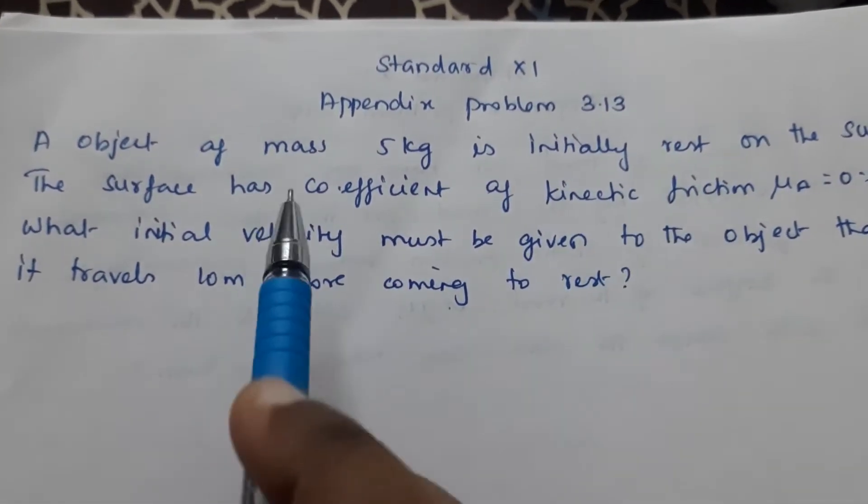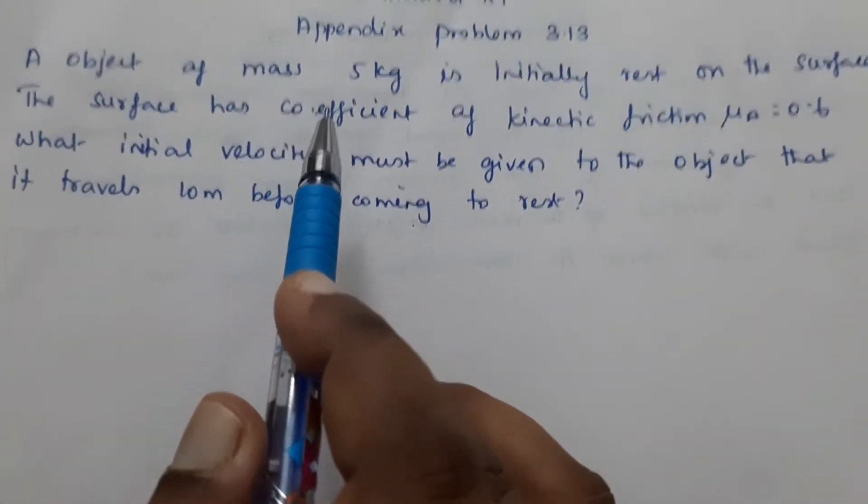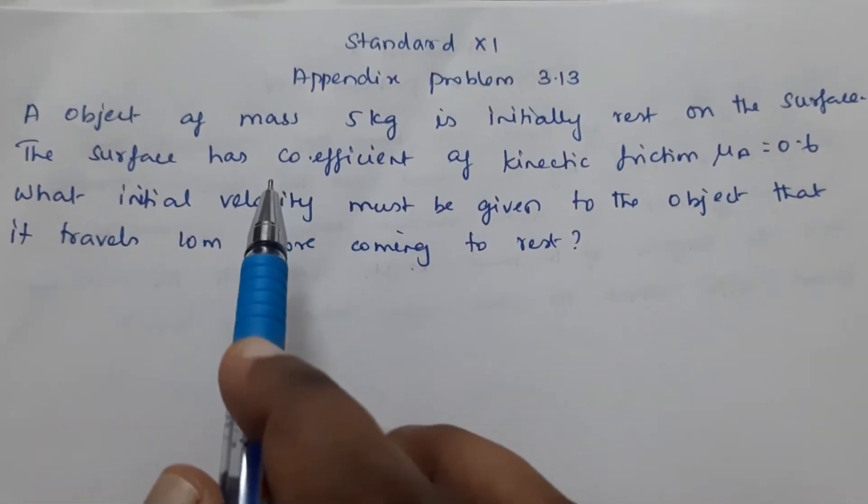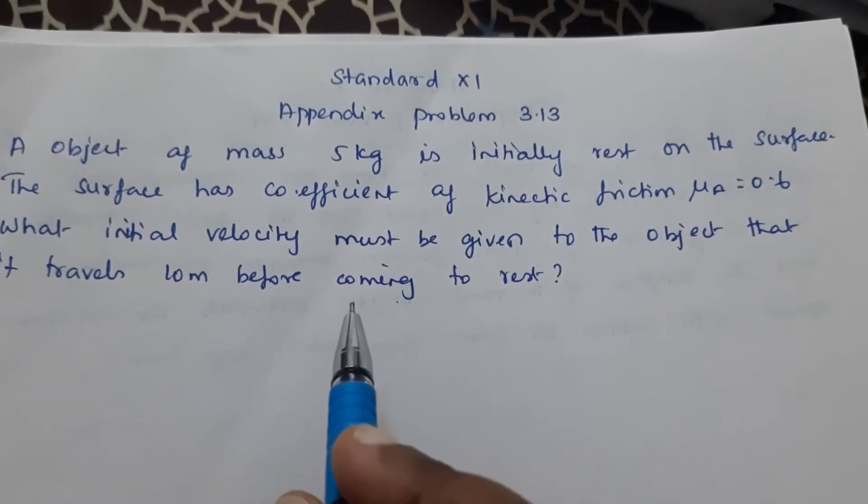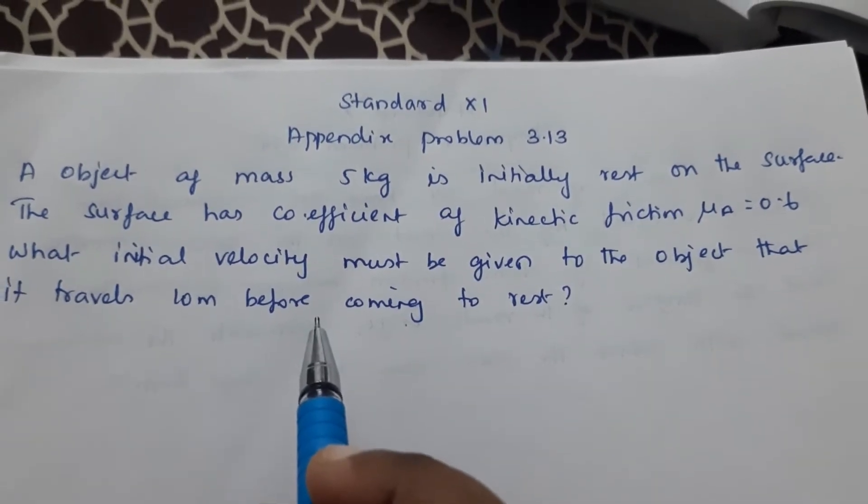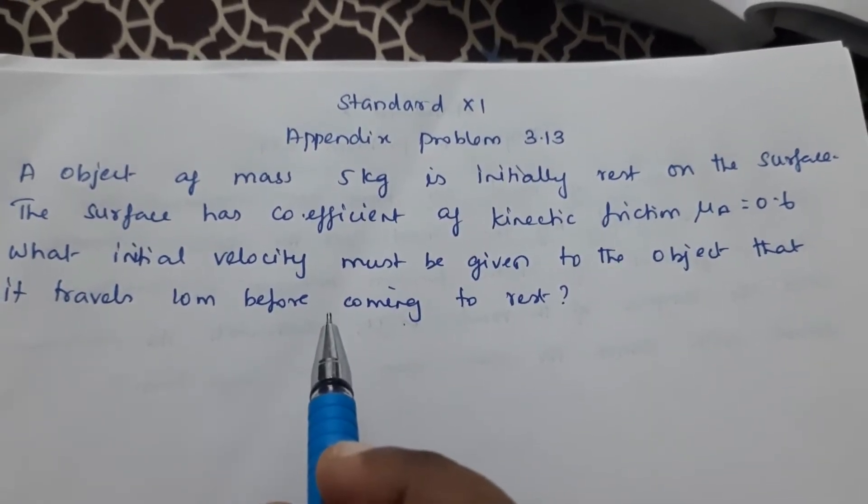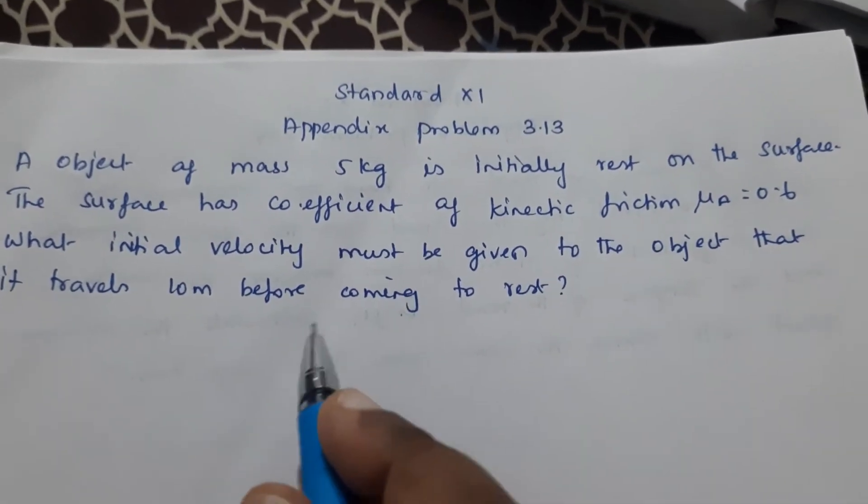Appendix problem 3.13. An object of mass 5 kg is initially at rest on the surface. The surface has coefficient of kinetic friction μk equal to 0.6. What is the initial velocity given to the object that it travels 10 meters before coming to rest?